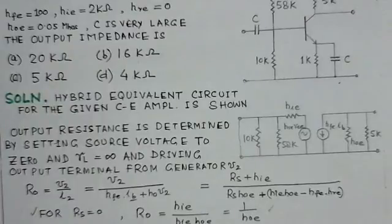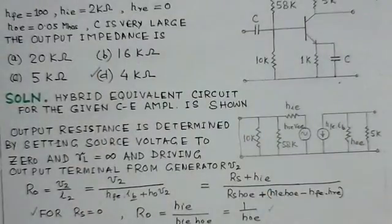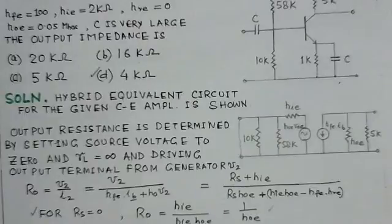So here 4 kilo ohm is option D, which is the right choice in this particular case. Thank you.